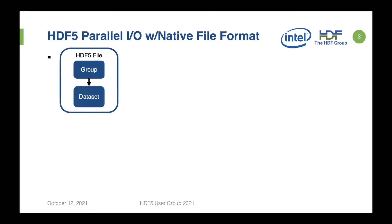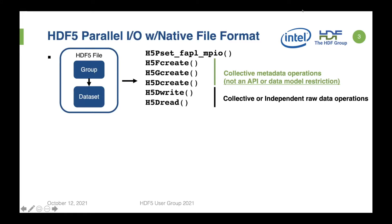Let's take a basic example of parallel IO. You have an HDF5 file, a group, and a dataset. With native HDF5, you would call H5P_set_fapl_mpio, then create your file, then call H5P_create, H5D_create, H5D_write, H5D_read. But some of the calls you have to make must be collective, and there is nothing in the API that imposes a restriction on the collectiveness of those calls.